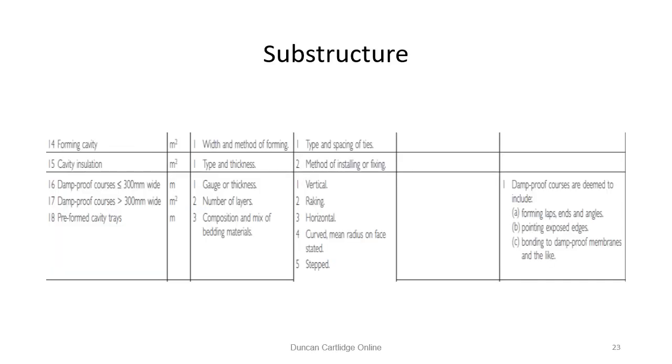Page 167 of New Rules of Measurement 2 contains the rules for the measurement of cavities, discussed earlier, and damp proof courses, which will be dealt with on the next page. Once again, the mean girth can be used for this item. And you've probably come to the conclusion that it's essential that the calculation of the mean girth is accurate. Any error will have a knock-on effect for several items.